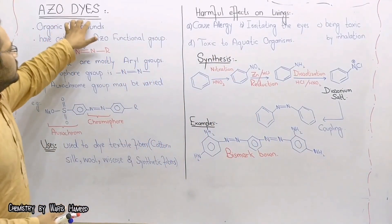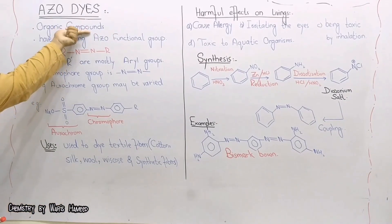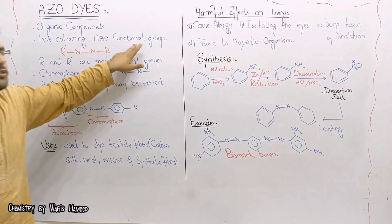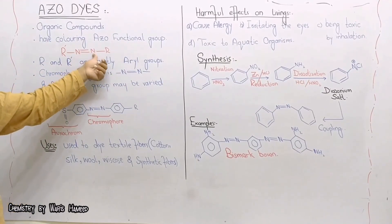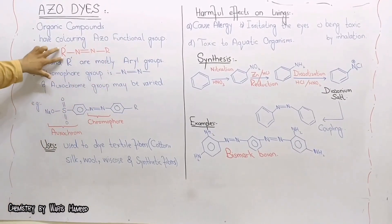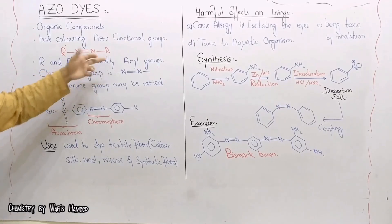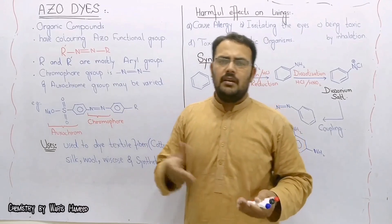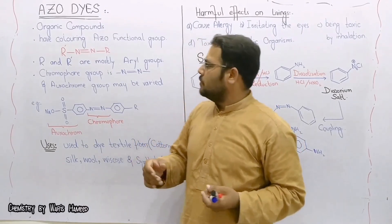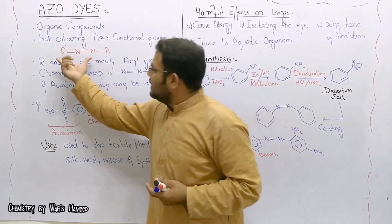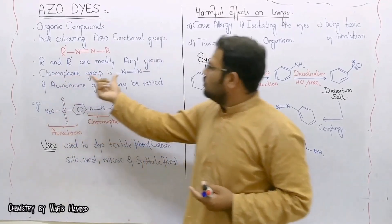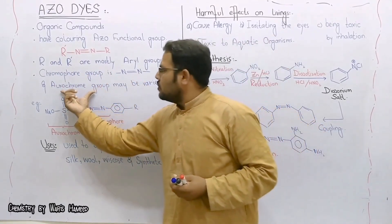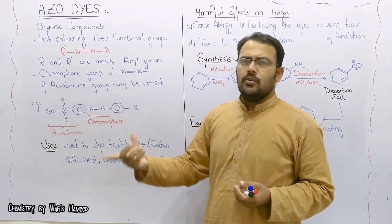Azo dyes are also organic compounds and they have coloring functional groups — that is, nitrogen double bond nitrogen (N=N). Here is an alkyl group on one side and another alkyl group on the other side. This alkyl group may be aromatic, a long chain hydrocarbon, or an ester group. In this case, the chromophore group is nitrogen double bond nitrogen (N=N).